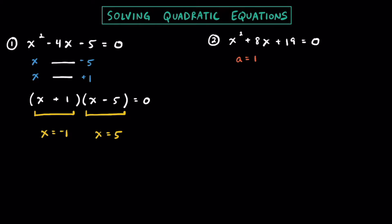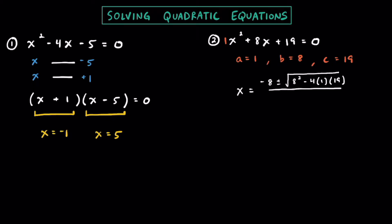So a is 1 here — that's the coefficient in front. We know b is going to be positive 8 and then we know c is going to equal positive 19. Plugging in these values into the quadratic formula, we have x equals the opposite of b or negative 8, plus or minus the square root of b squared — that's 8 squared — minus 4ac, so minus 4 times 1 times 19, and that whole thing is going to be over 2a, so that's 2 times 1 or just 2.